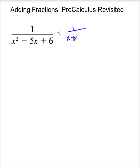So this is x minus 3 times x minus 2. And you would say that this is equal to A divided by x minus 3 plus B divided by x minus 2.